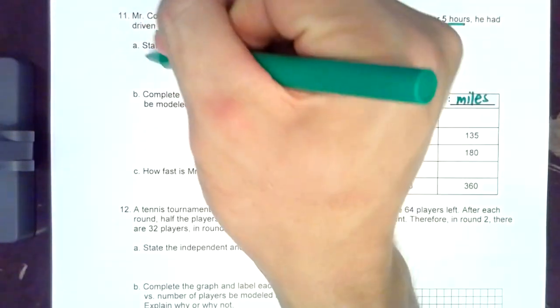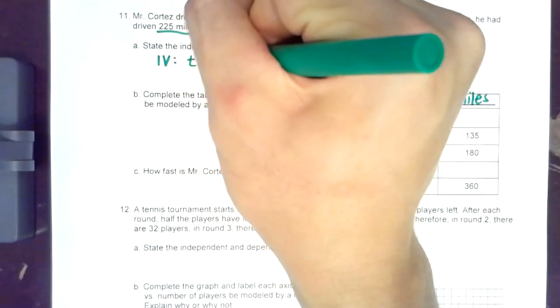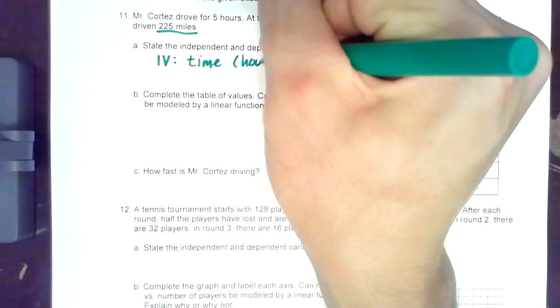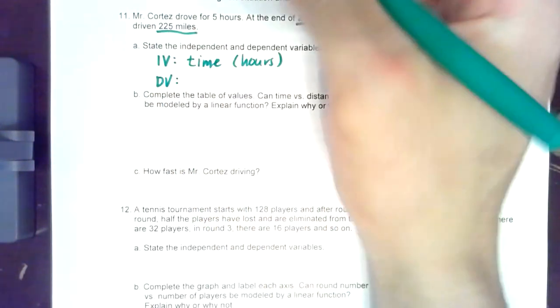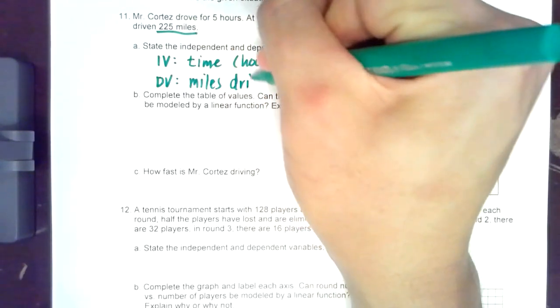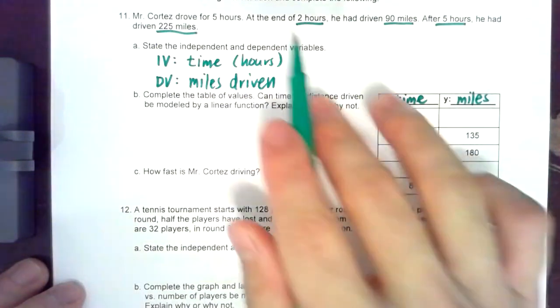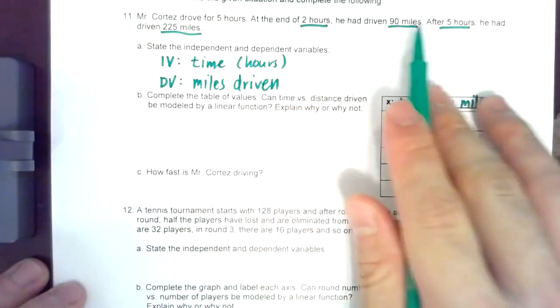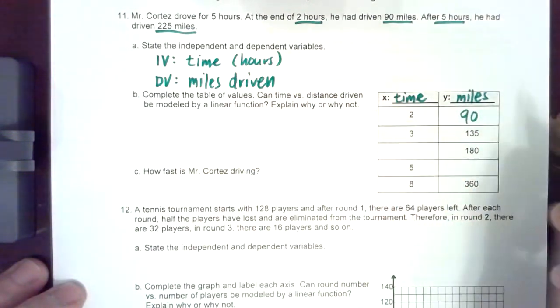So let's go ahead and write that. The independent variable is the time in hours. The dependent variable in this case is the miles driven. And go ahead and fill out the chart. It says at the end of two hours you have driven 90 miles so write 90 for 2.